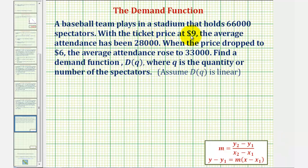A baseball team plays in a stadium that holds 66,000 spectators. With the ticket price at nine dollars, the average attendance has been 28,000. When the price dropped to six dollars, the average attendance rose to 33,000.